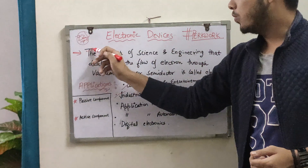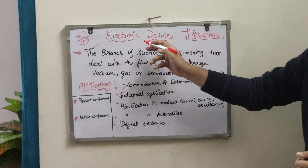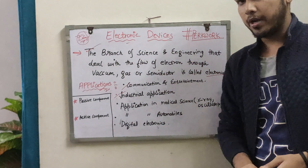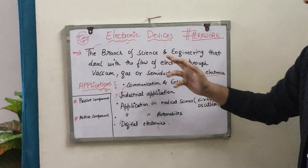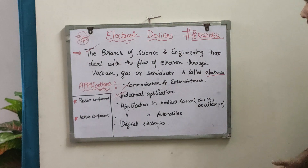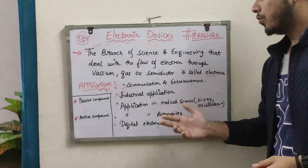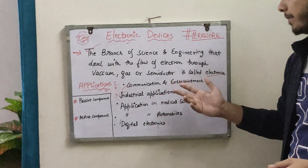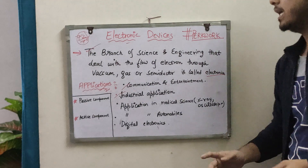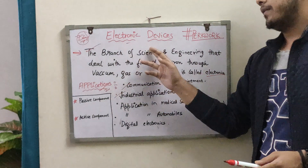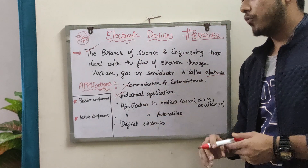Sabse pehle baat kareenge ki what do you mean by electronics. Electronic devices mein electronics ki meaning kya hai: Electronics is the branch of science and engineering that deals with the flow of electrons through vacuum, gas, or semiconductors. Is called electronics.